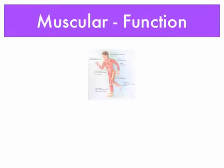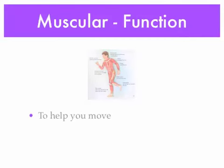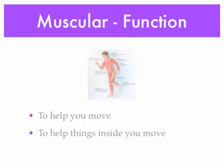The muscular system has two functions. The first is that it helps you move. The second is that it also helps things inside you move — organs, for example. The digestive system is a good example of muscular organs that help move things internally. The heart is also a muscle; related to the respiratory and circulatory system, it pumps blood around your body.